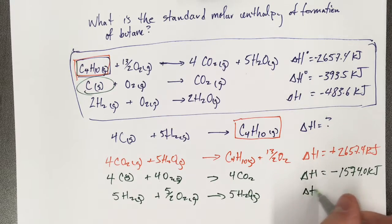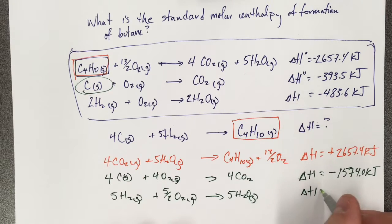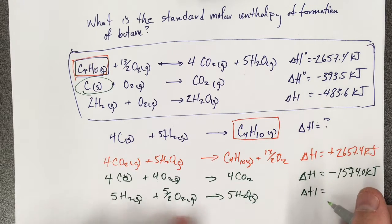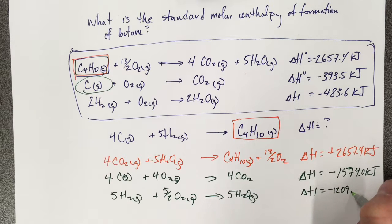Well, I'm going to take this enthalpy, it's still going to be negative, but it's going to be times 5 divided by 2, because that's how many moles I multiplied through by. So I get negative 1209.0 kilojoules.